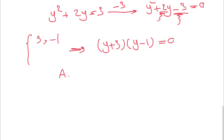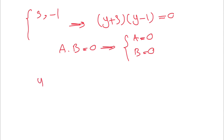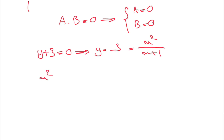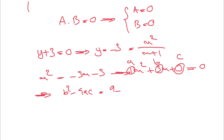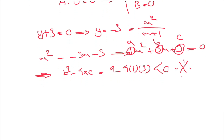Since ab = 0 means a = 0 or b = 0, let's try the first case: y + 3 = 0, so y = −3. Since y = x²/(x+1), we get x² = −3x − 3, i.e., x² + 3x + 3 = 0. The discriminant is b² − 4ac = 9 − 4(1)(3) = −3, which is negative. That means no real solutions, so this case is rejected.